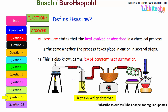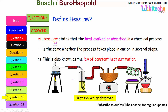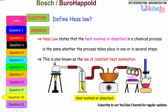Define Hess's Law. This is a very important question. In the case of generating heat in chemical emissions, Hess's Law states that the heat evolved or absorbed in a chemical process is the same whether the process takes place in one step or in several steps. This is also known as the law of constant heat summation.